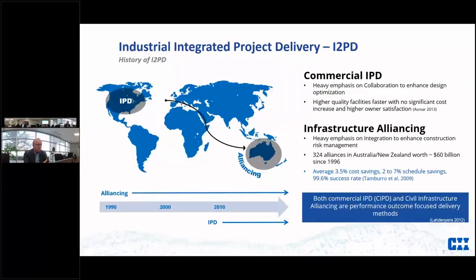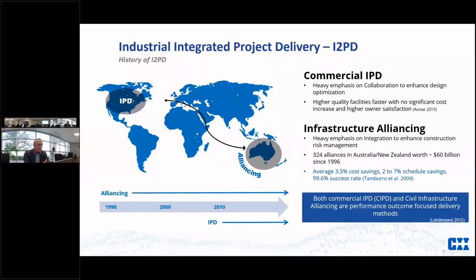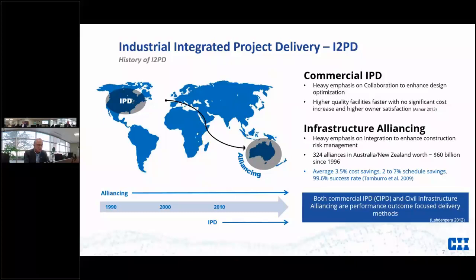Where did I2PD come from? The history of I2PD: alliancing, as Mike mentioned, has been around for 30 years, starting in the North Sea and migrating to Australia and New Zealand. Commercial IPD has also been around for a number of years. We've taken both of those collaborative contracting models and put them together, utilizing a number of the principles and methods to create this collaborative contracting model. It's performance-based versus a transactional model, so the outcome of the project determines the success of the team and ultimately the individual parties that make up that I2PD team.